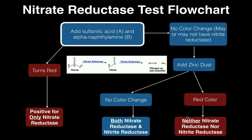Similarly, if sulfanilic acid and alpha-naphthylamine showed no color change and after adding zinc dust there is still no color change, then both nitrate reductase and nitrite reductase are present. Generally, if a question tells you zinc dust was added, that pretty much means there was no initial color change. The only way to get a positive result for only nitrate reductase is if the color change was immediate, with no need to add zinc.